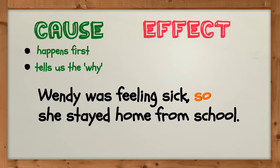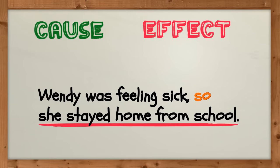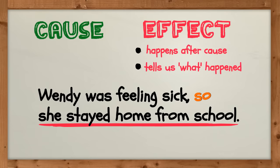The cause must be Wendy feeling sick. It had to have happened first and it answers the question why. Why did she stay home? We know Wendy staying home from school must be the effect because it happened after the cause and it tells us what happened. Wendy stayed home.